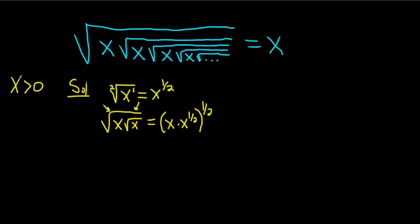Properties of exponents say that whenever we have a product like this being raised to a power, we can raise each factor to a power. So this is x to the 1 half times x to the 1 half to the 1 half. And what you do is you multiply. So 1 half times 1 half is 1 fourth. So we get x to the 1 fourth.